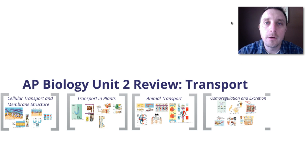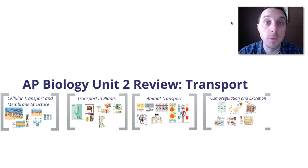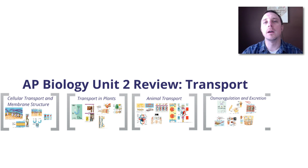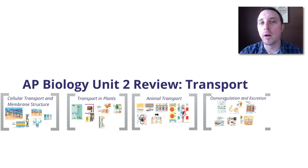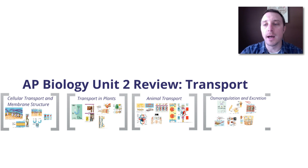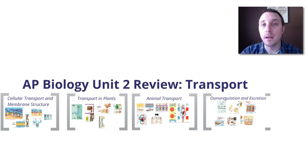Hi, Dr. H here. This video is going to review Unit 2 of the AP Biology course, and this unit is about transport. We will start with the cellular aspects of transport, cell membrane structure, and how do cells move molecules in and out. Then we'll get into some of the larger organ systems involved in transport, both in plants — water movement and the sugar sap movement — and then moving things around animals, the circulatory system, moving dissolved gases around.